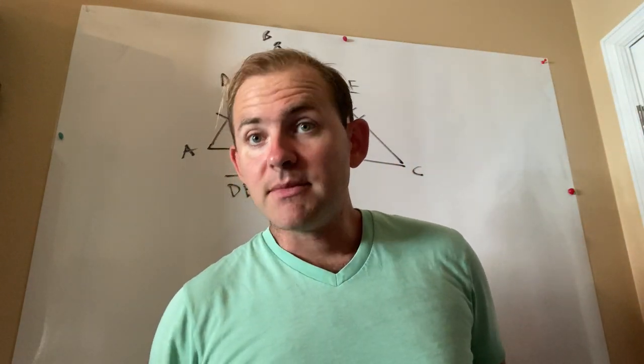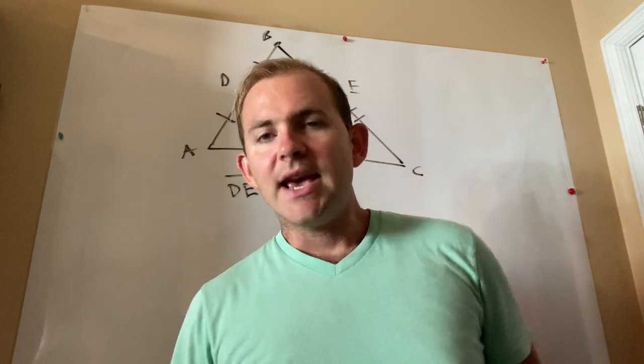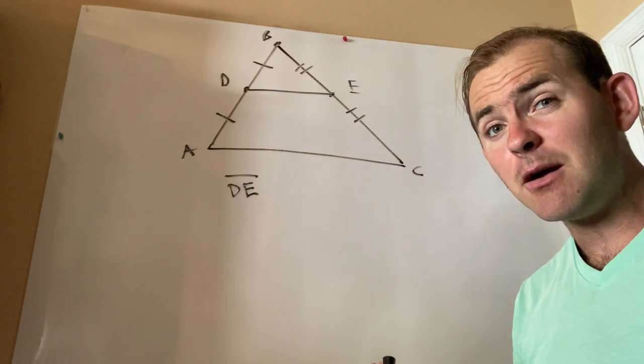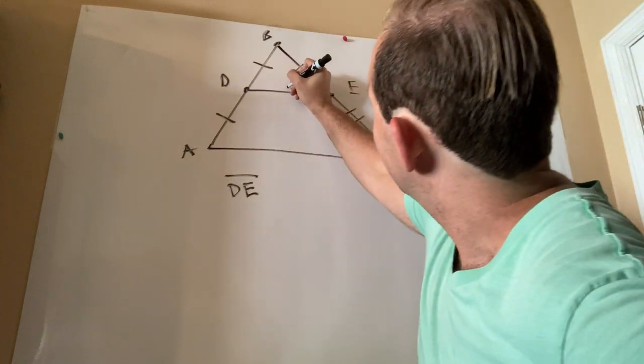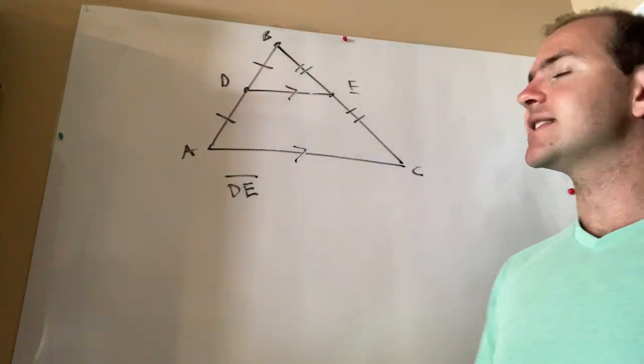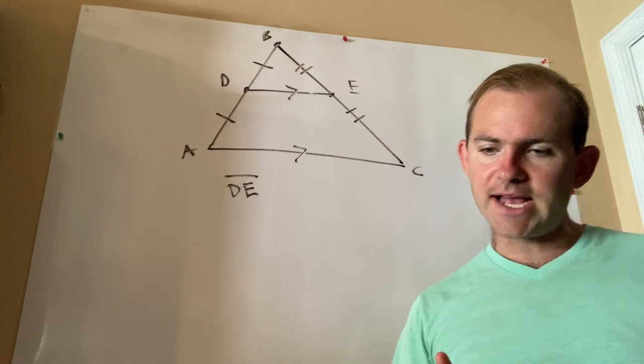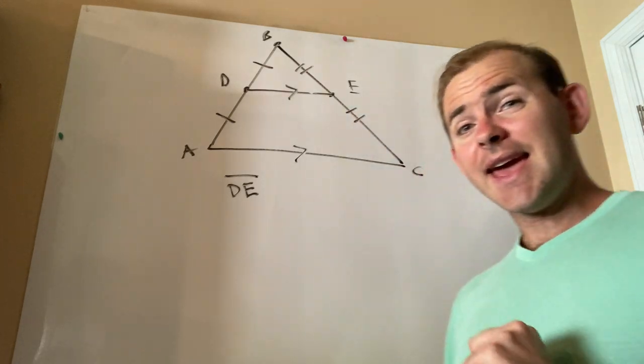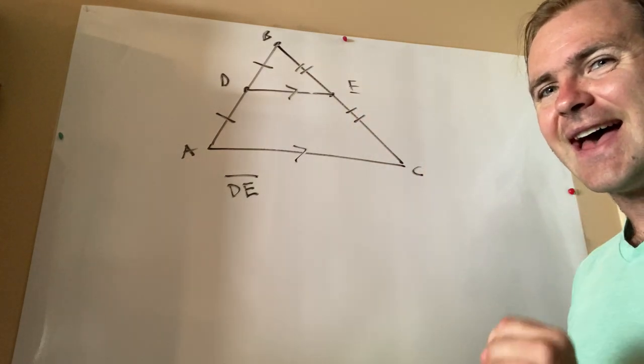Now, if the segment is a mid-segment, meaning it joins the midpoints of two sides, then the segment is parallel to the third side. And the way I'm going to show that is by using these arrows right here. It's parallel to the third side, and it's half as long.